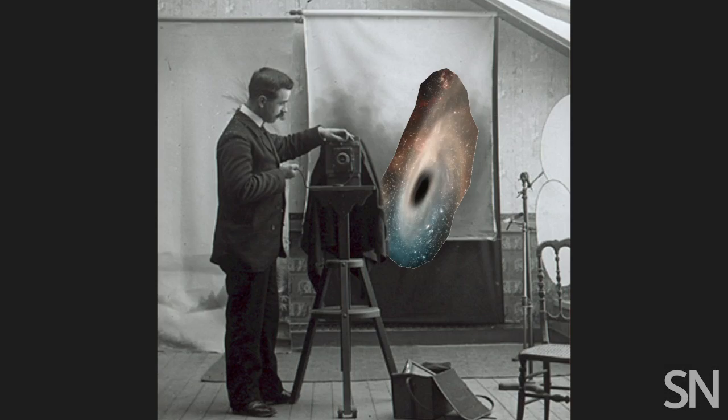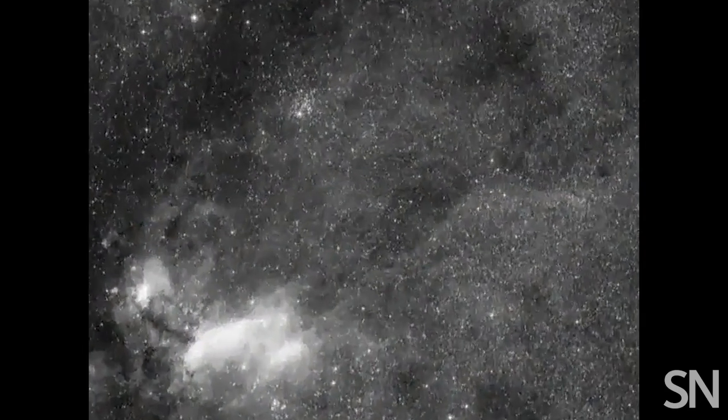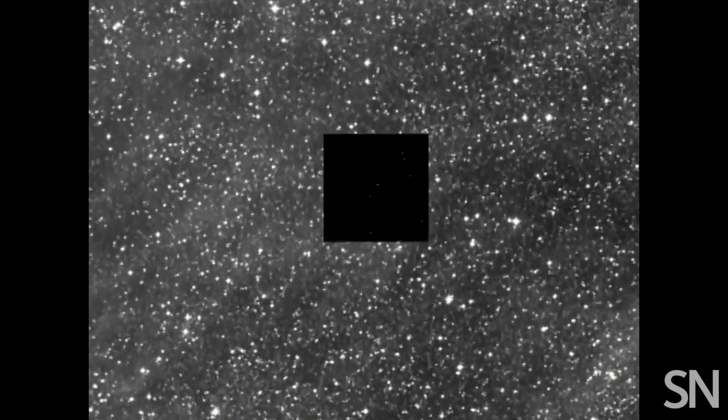Those aren't the only reasons black holes are hard to photograph. Even though they're really massive, they can be millions or billions of times the mass of the sun, they don't take up that much space on the sky. They've compressed all that mass into a really tiny little space.